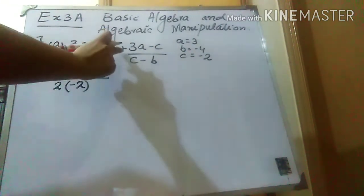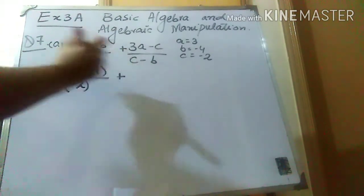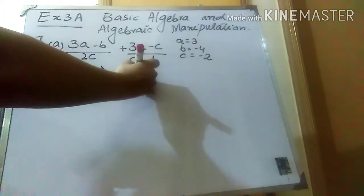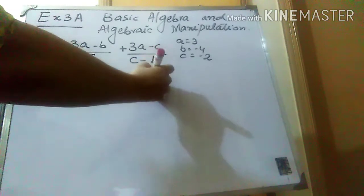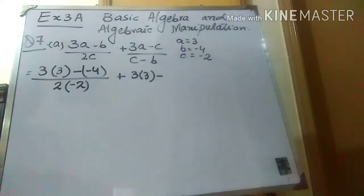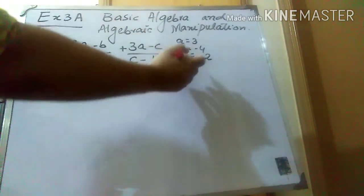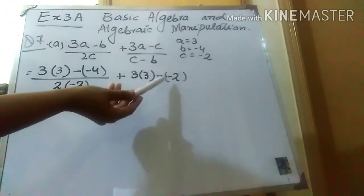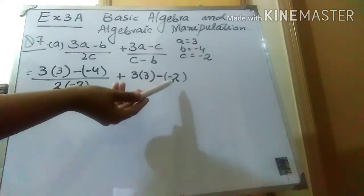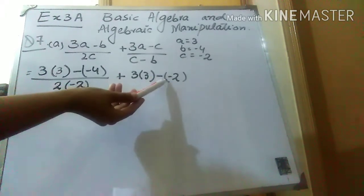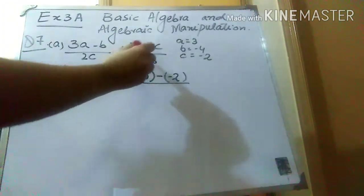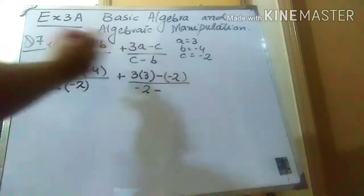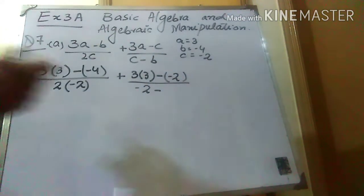In between the two parts there is a plus sign, so write the plus sign in between. Now solve it: 3a — instead of a put 3 — minus c, instead of c put (minus 2), and for this c put the value (minus 2). I'm writing the value in brackets because the number has a minus sign with it. Whenever a number has a minus sign, you can write it in brackets. So c minus b becomes minus 2 minus (minus 4).